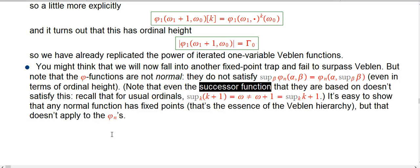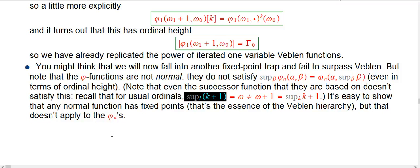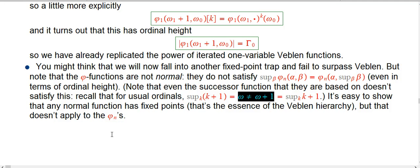Even when you throw away the fundamental sequence data, this is just not true. And that's not particularly pathological at all. The successor function is of course one of our favorite functions, and that's not a normal function. The simplest example: if I take a bunch of numbers k, add one to all of them and take the supremum, that's just the supremum of all the integers — that's just omega by definition. That's not the same as first taking the supremum of all the integers, which is omega again, and adding one. Because omega and omega plus one are not the same thing.